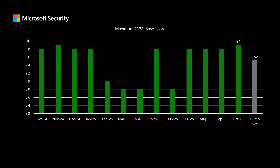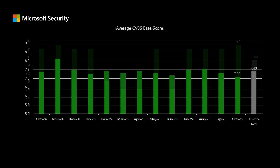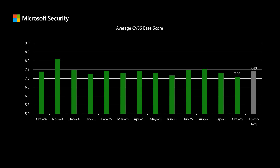Next, I'll move into scoring, where Microsoft uses the Common Vulnerability Scoring System, or CVSS. This is a scale between 0 and 10, where 10 represents the highest level of risk. This month, the highest scored CVE comes in at 9.9, which is a bit above our average of around 9.5 over the past 13 months. The average CVSS score across the entire release comes in at 7.08, which is a little bit lower than our average over the past 13 months of right around 7.4.